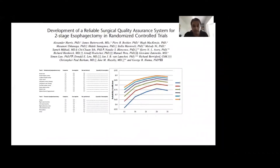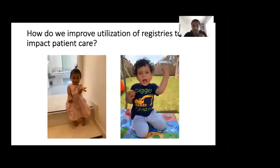A lot of this work has already been developed as part of George Hannah's group at Imperial College, where they've created OCR for Ivor Lewis esophagectomy — mainly in the setting of a randomized control trial. But I would argue: why can we not collect the videos as part of a registry and analyse them in such a fashion?